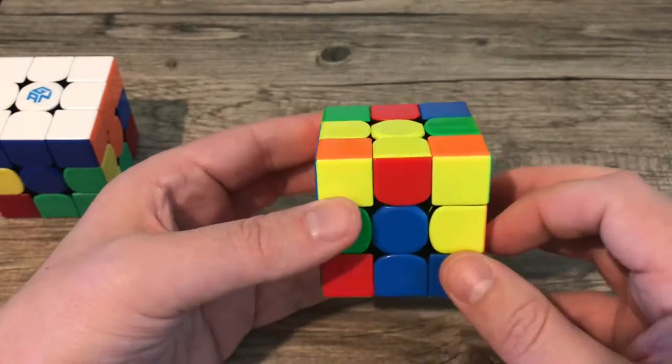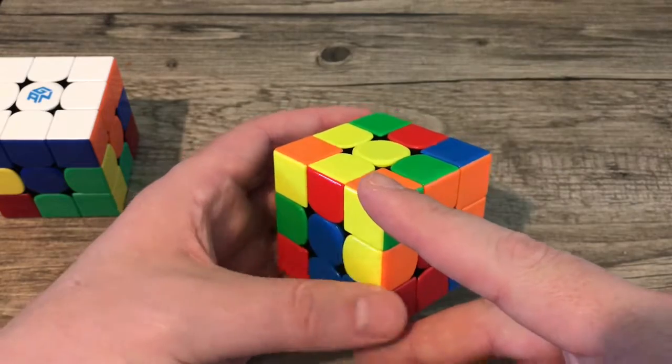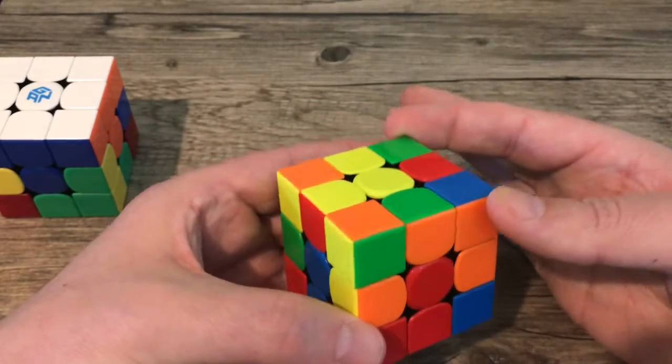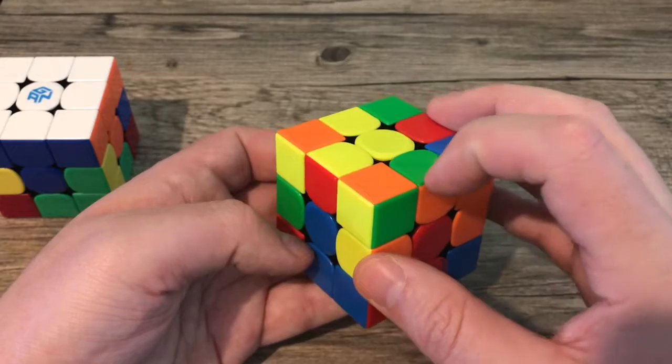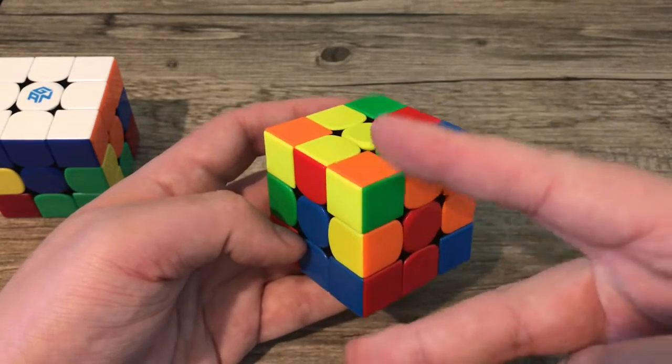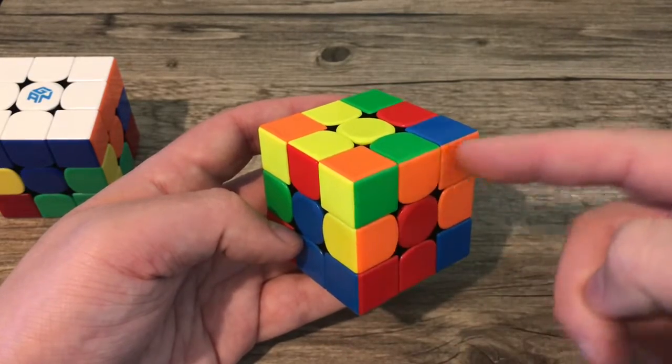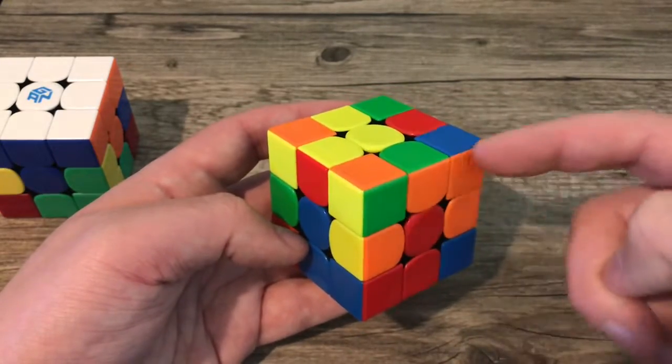And there you have it. Just remember, Sexy Move does a couple things. It will switch those blocks, those blocks right back here, and it will also switch these three edges. But for this step and this step only, we are only worried about switching those two blocks because these blocks over here don't matter for this stage.